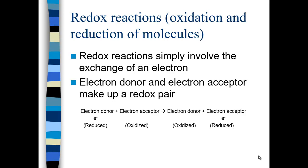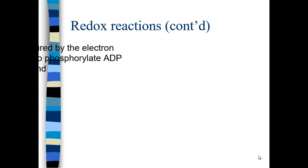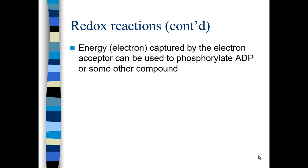The electron donor, before it gives up its electron, we refer to as reduced; the acceptor is oxidized. However, once the electron donor gives up its electron, it's now oxidized, and the electron acceptor has been reduced. Energy captured by the electron acceptor can be used to phosphorylate ADP. ADP is adenosine diphosphate — it gets an additional phosphate and becomes adenosine triphosphate, which is used energetically.